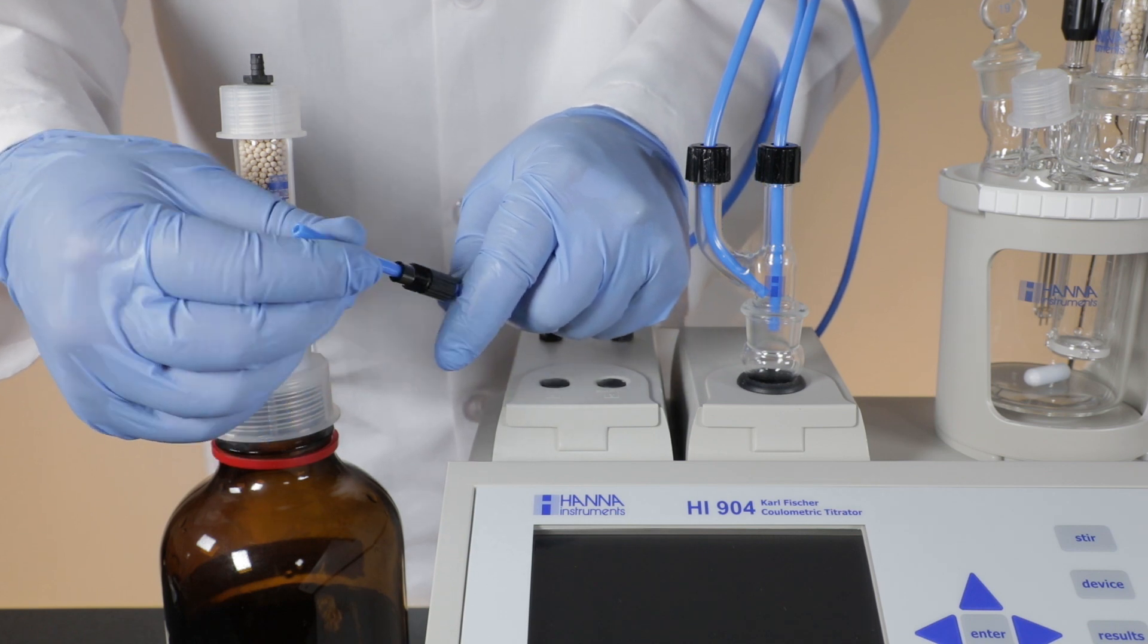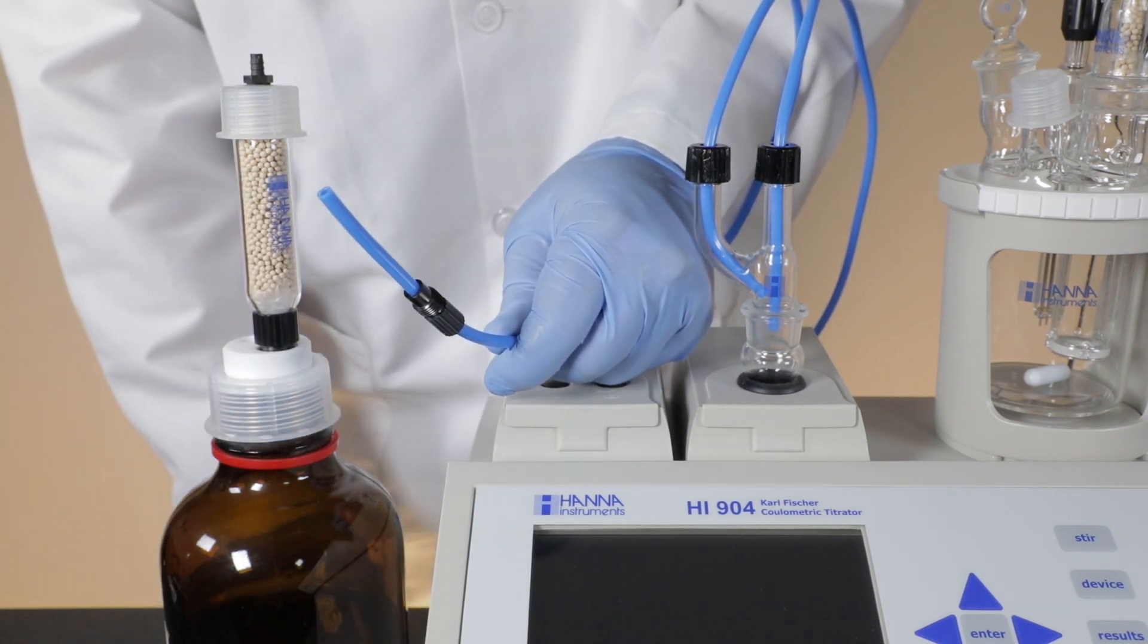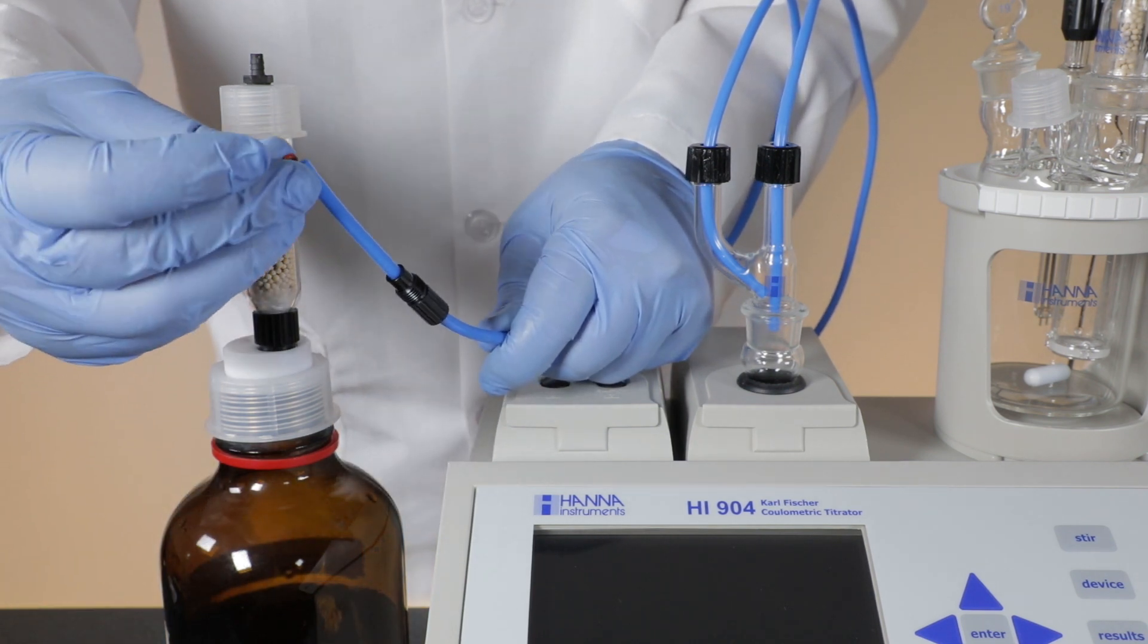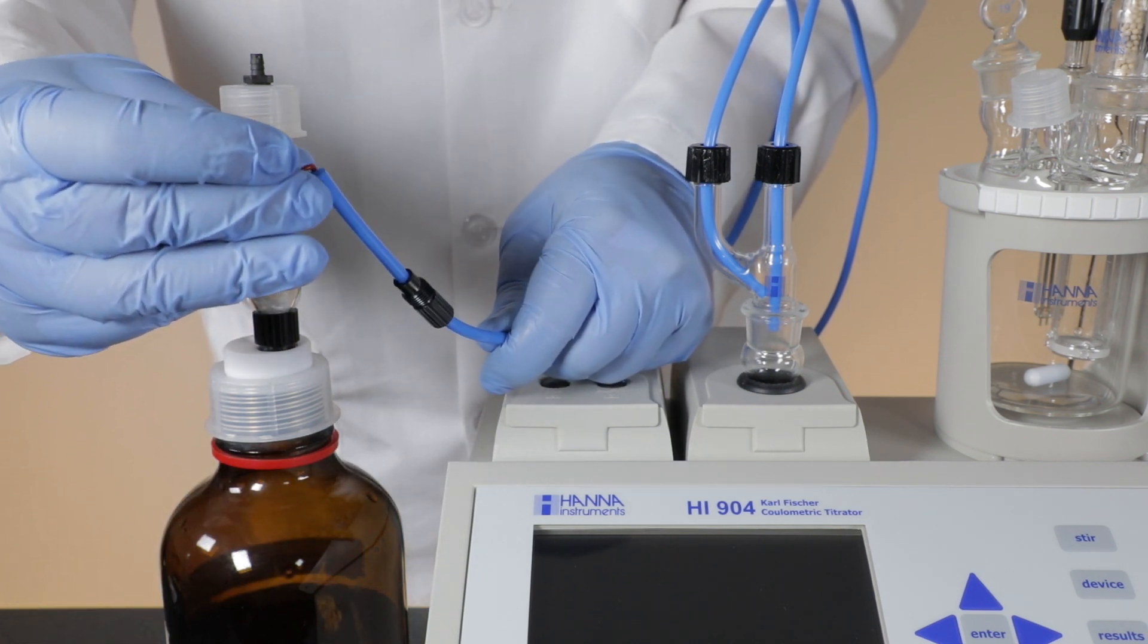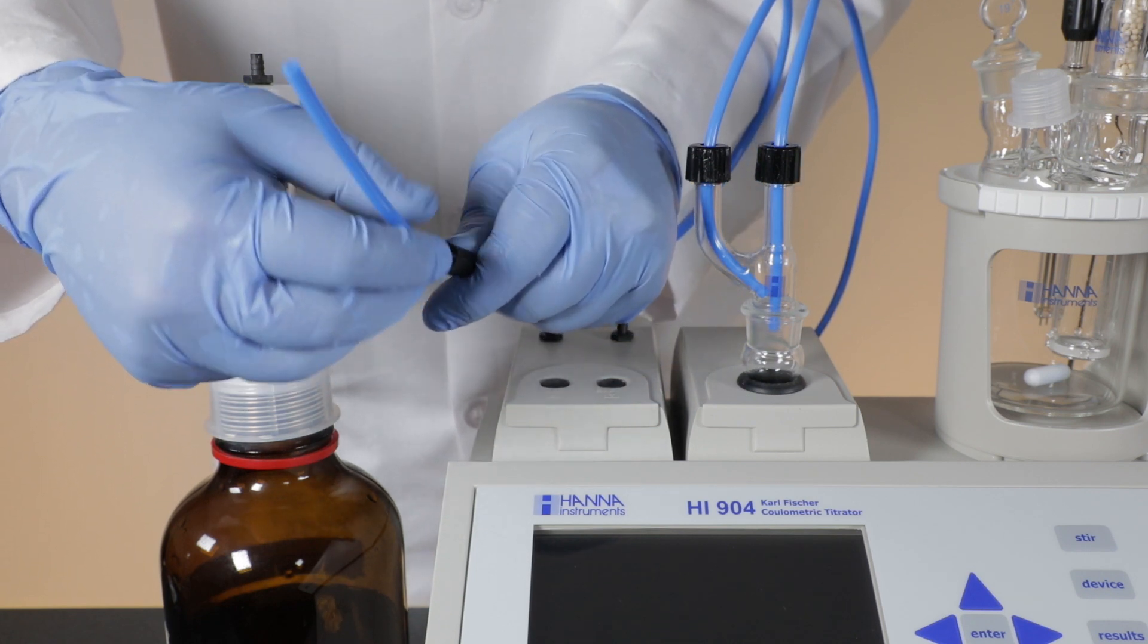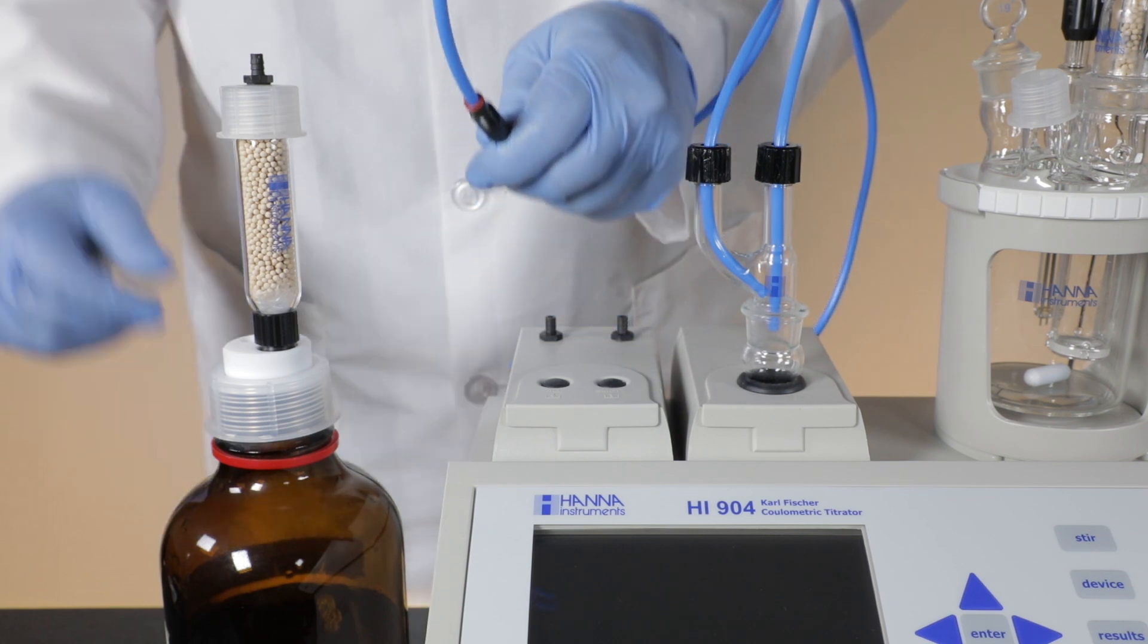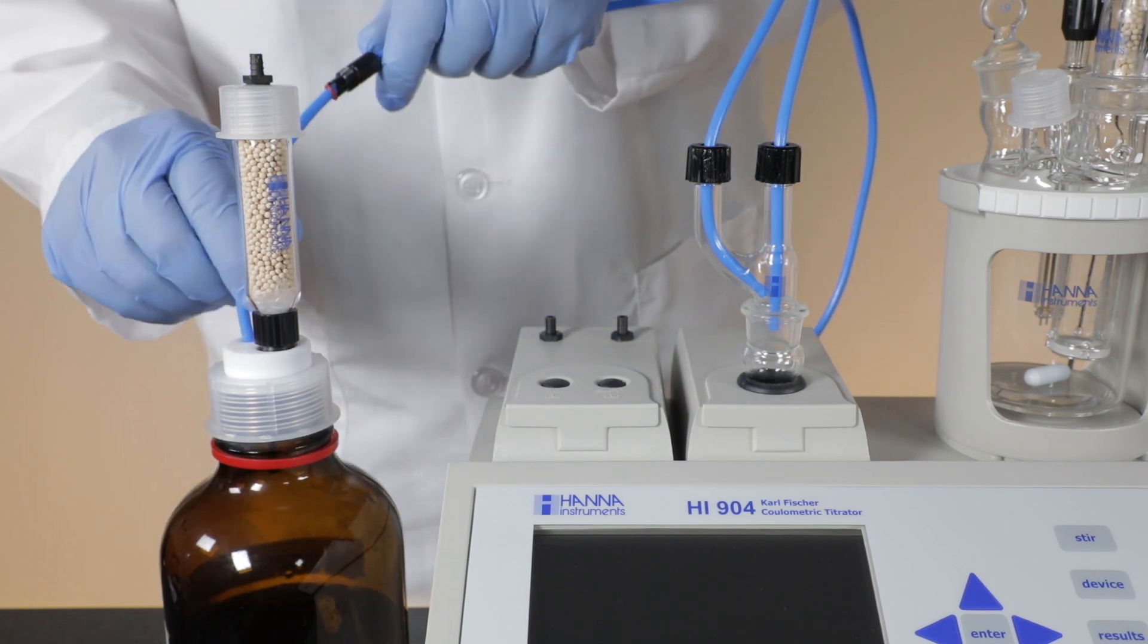Now, insert the tubing from the analyte port on the reagent exchange adapter into the 5mm fitting and red O-ring. Push the tubing down into the bottle and screw the fitting onto the bottle top.